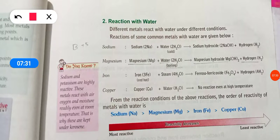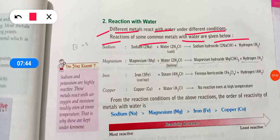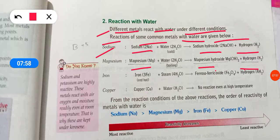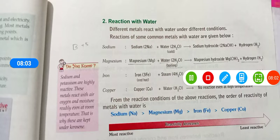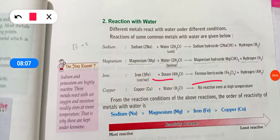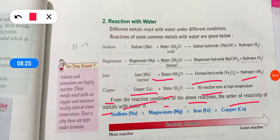Now, reaction with water. Different metals react with water under different conditions. Sodium reacts with water to give sodium hydroxide plus hydrogen. Magnesium reacts with water to give magnesium hydroxide plus hydrogen. Red-hot iron reacts with steam to give ferric oxide plus hydrogen. Copper does not react with water even at high temperature. The order of reactivity with water is: Na > Mg > Fe > Cu.